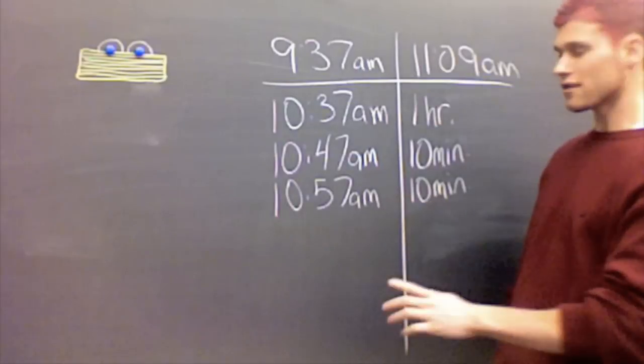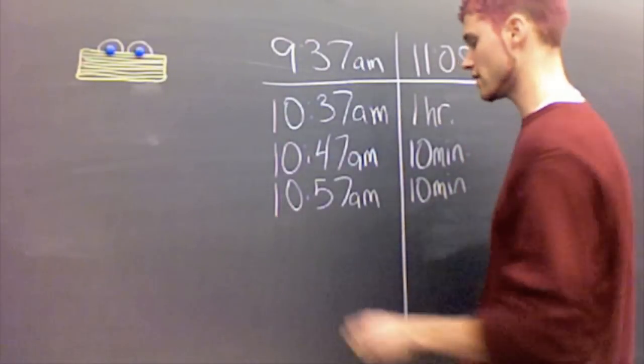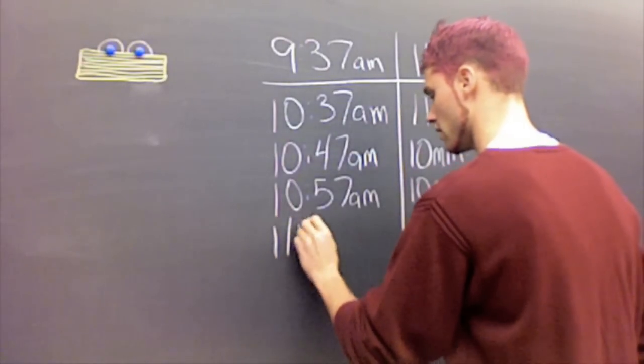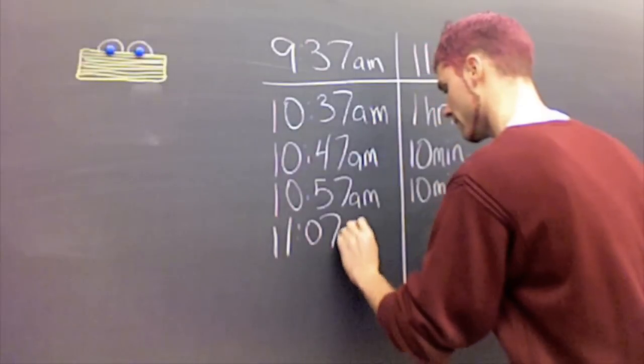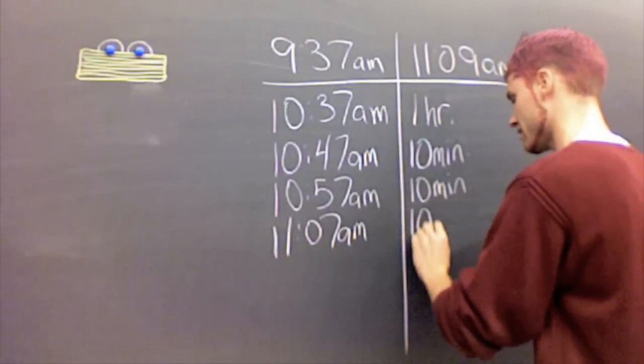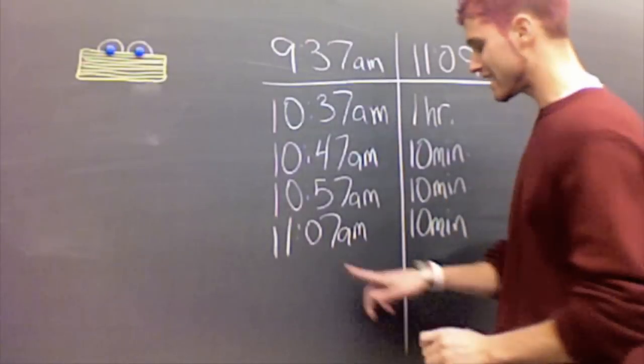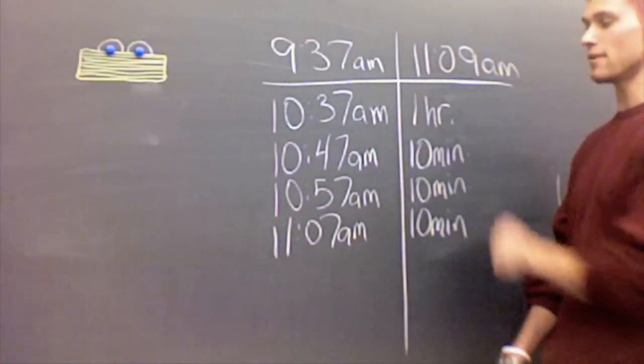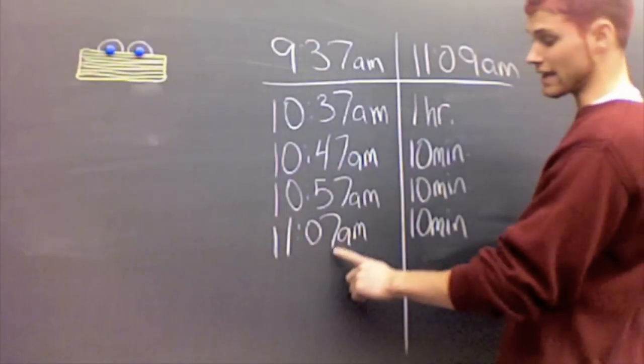Now, it looks like I can go another 10 more minutes before I go over, so I'll go to 11:07 A.M. And that was 10 more minutes. Now, I can't go 10 more minutes, because I would go past my time of 11:09.